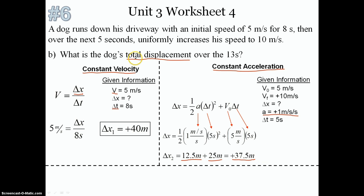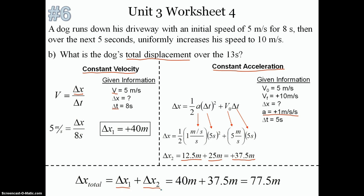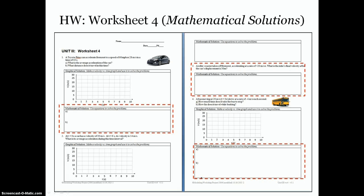To find the total displacement of the dog, we add the displacement during the first part of the motion plus the displacement during the second part. The dog traveled 40 meters at constant velocity and then an additional 37.5 meters while accelerating, giving a total displacement of 77.5 meters — which matches what we found with the graphical solution. This shows we can use the derived equations to solve the same problem in a different way. Now go back to Unit 3, Worksheet 4 and solve those problems mathematically — you already know the correct answers from the graphical work.